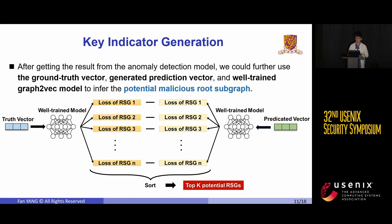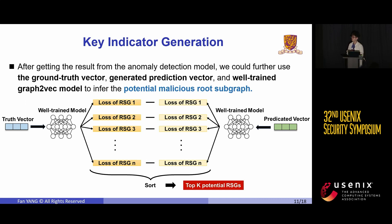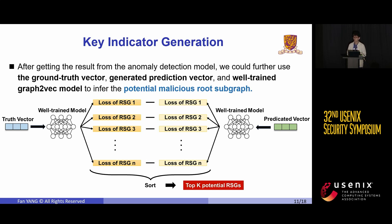After obtaining the result from the anomaly detection model, we could further infer the potential malicious rooted subgraph. As explained earlier, the losses of each snapshot and its rooted subgraphs represent their co-occurrence likelihood. Then for each abnormal snapshot, based on this principle, we could filter out unexpected rooted subgraphs. As shown in the picture, by employing the well-trained encoder model and the graph embeddings, we could compute the losses of all rooted subgraphs within the abnormal snapshot, calculate the difference and sort them accordingly. If the difference is substantial, it indicates that the rooted subgraphs should not occur but are present in the abnormal snapshot with non-low probability. Consequently, we identify such rooted subgraphs as suspicious and select the top-K suspicious rooted subgraphs to provide further investigation for analysts.